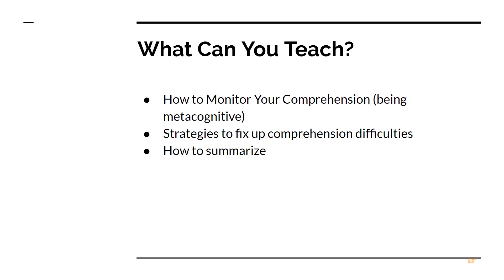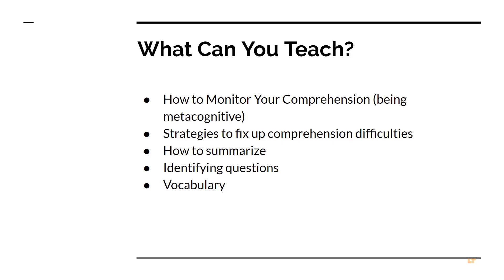Other things we need to teach: how to summarize what we've been reading, and how to identify questions that we have. Not every question is super important — how do we differentiate between those that really matter and those that are more superficial? Vocabulary knowledge is also a critical part of content area literacy. It helps build students' background knowledge and gives them greater access to text. In any discipline you've got your discipline-specific terms, and providing vocabulary instruction on those terms is going to be helpful.